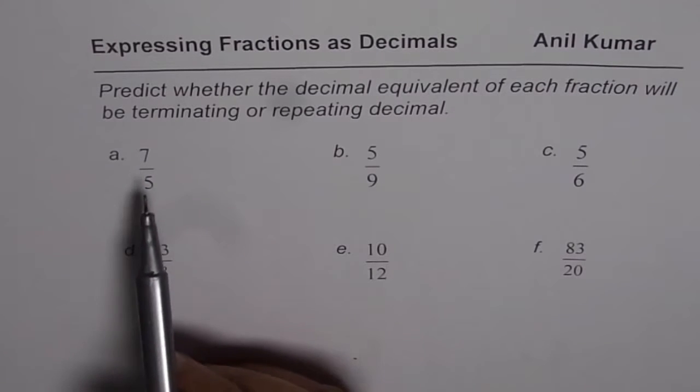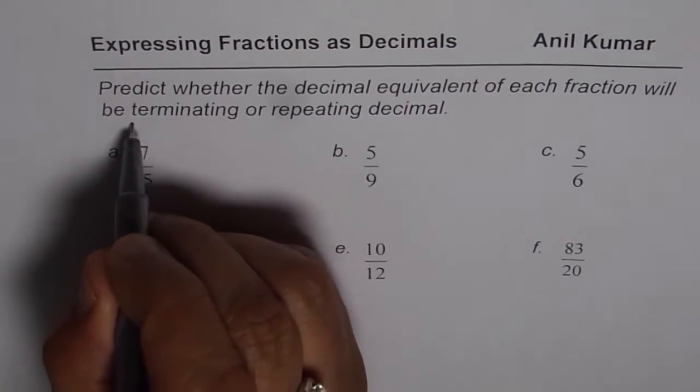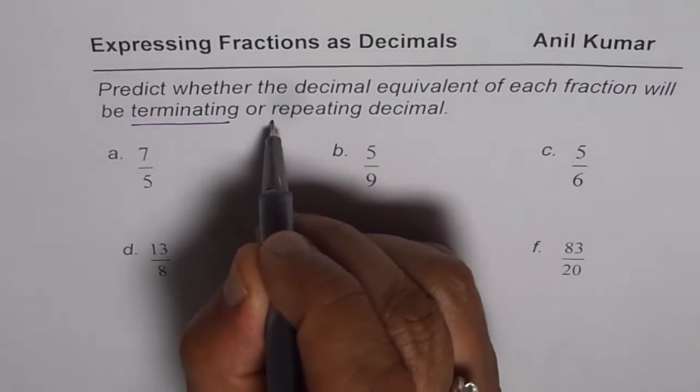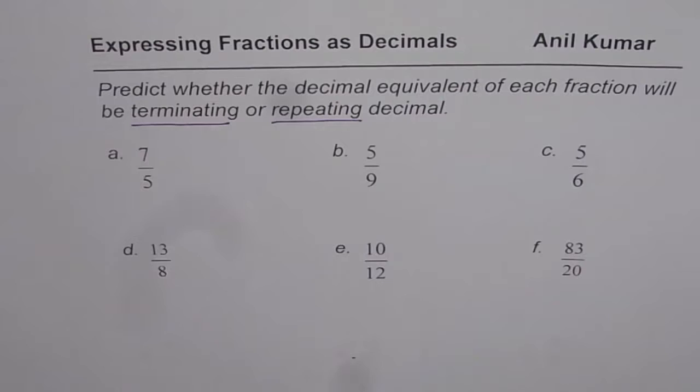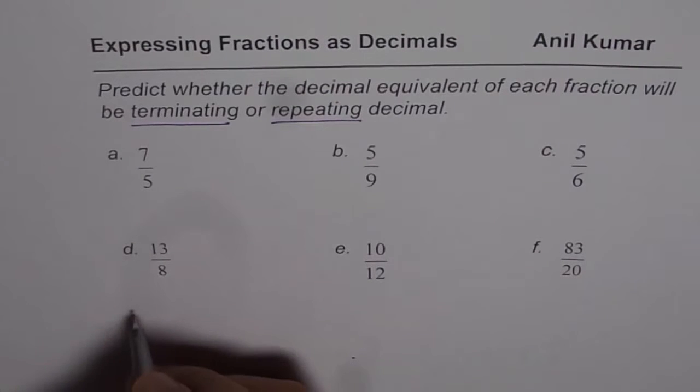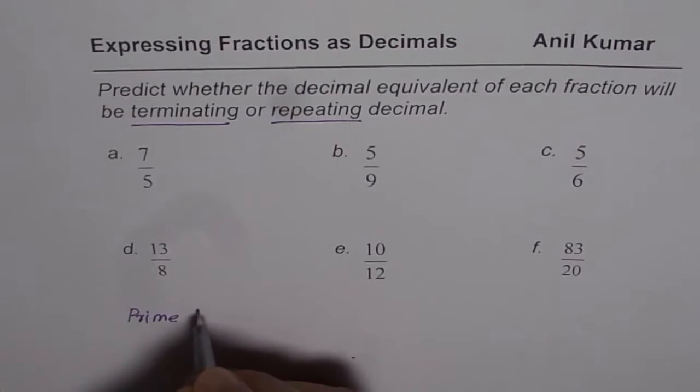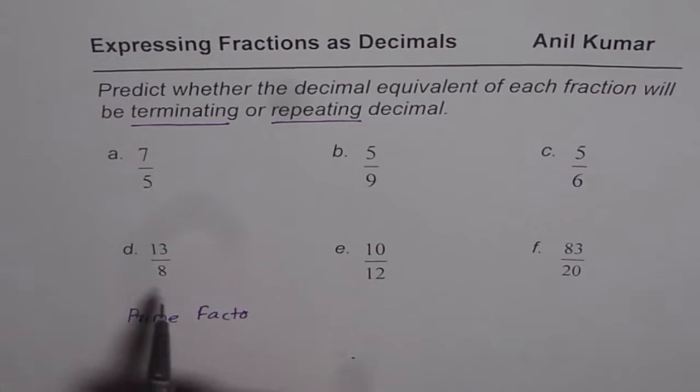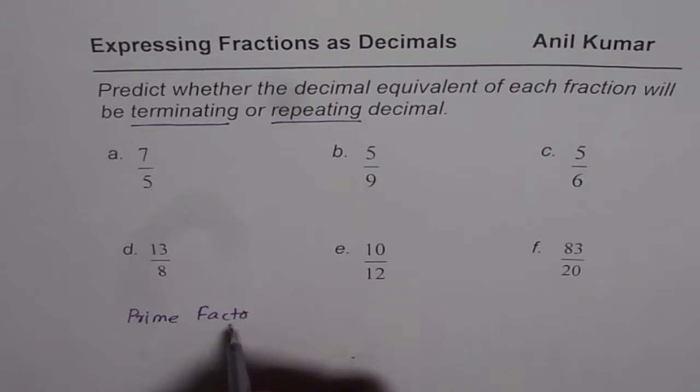Now the question is, when we divide 7 by 5, do we get terminating decimal or repeating decimal? This is what we need to decide. How can we figure that out? One of the solutions is to write prime factors, or we call it prime factorization. That process of writing a number as product of prime factors is called prime factorization.